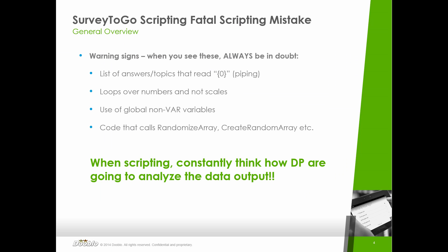To sum things up, the most important rule for this specific issue is: avoid not saving randomized output. But the bigger learning is that when scripting, constantly think about how data processing is going to analyze the data output and whether they can. The best scenario is to work with the data processing team together when scripting. If that's not possible, try to envision how you'd analyze the data as a data processing person, and see if the code you're writing right now makes any sense later on for the data.